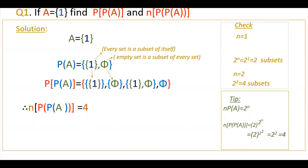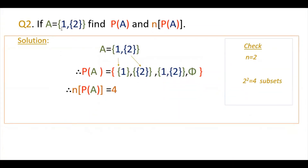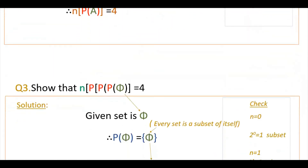The second question: set A has two elements, 1 and 2 inside the braces. Find P(A) and n(P(A)). Since there are two elements, you will get four subsets: {1}, {2}, {1,2}, and the empty set. Write all four subsets inside the braces to get the power set. Therefore n(P(A)) = 4. You can verify directly: 2 squared equals 4 subsets.